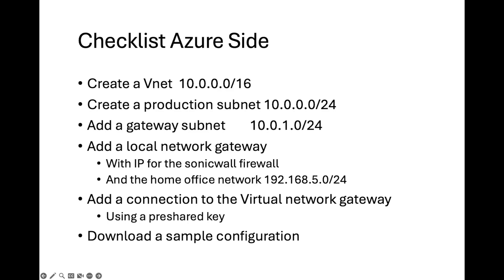On the Azure side, this is what we're going to do. We're going to create a VNet, which I already created. We're going to create a production subnet, which is in the 10.0.0.0/24. And we're going to add a gateway subnet as well, because we need a gateway subnet in order to have a virtual network gateway. Without a gateway subnet, we cannot have a virtual network gateway. And we're going to add a local network gateway, which is going to point to the IP address of the SonicWall on-prem. While we're creating the local network gateway, we're going to add the home office network, which is the 192.168.5.0/24.